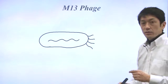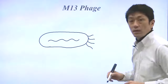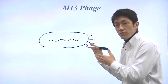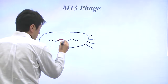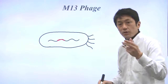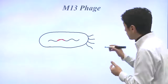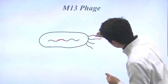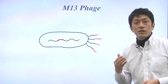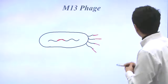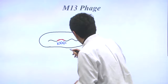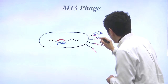We can insert the protein coding sequence into the phage gene that encodes the surface protein — we can insert some kind of gene here — so that the protein of interest can be presented on the surface of the phage. When the DNA sequence inserted is random, you can get a randomized peptide on the surface.